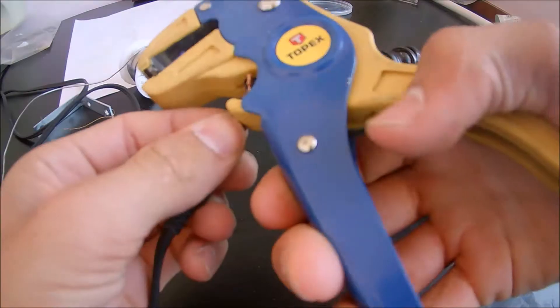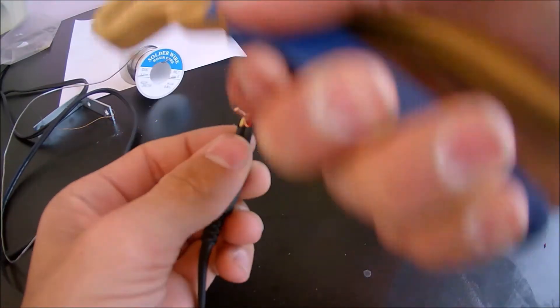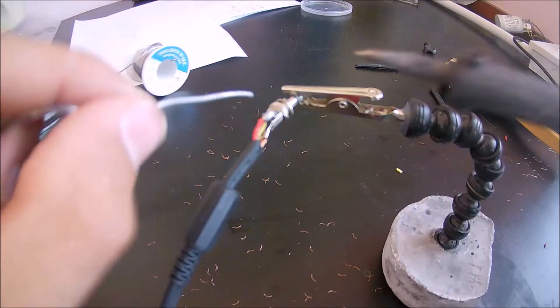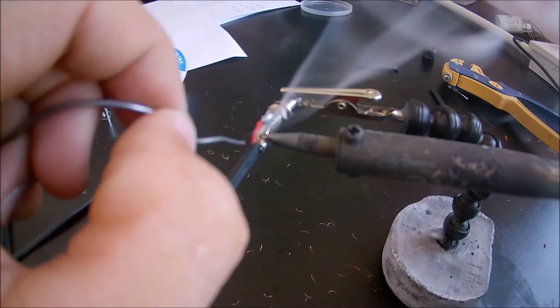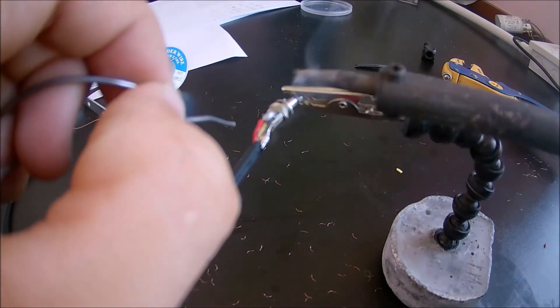Now, for the ground wire, I went ahead and cut it as short as possible. Then, soldered it to the ground pin. After this, I repeated everything with the other audio jack.